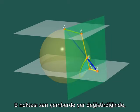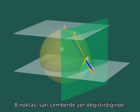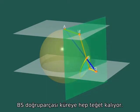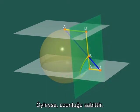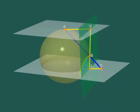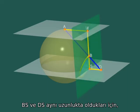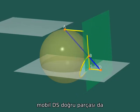When B moves along the yellow circle, the segment B-S keeps tangent to the sphere. Its length is therefore constant. Since B-S and D-S have the same length, the moving segment D-S also retains a constant length.